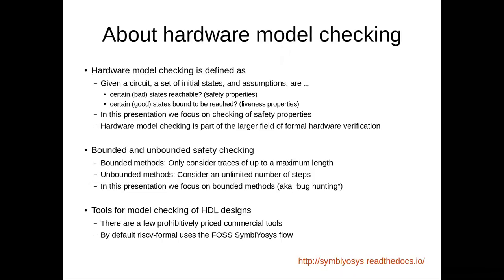There are two categories of proofs: bounded and unbounded proofs. With bounded proofs, we only prove that it's impossible to reach a bad state within a certain number of cycles - we give a maximum bound for the length of a counterexample. With unbounded proofs, we prove that a bad state can actually never be reached. Unbounded proofs are of course better if you can make them, but in many cases this is very hard to achieve. Bounded proofs are something that we can do, and that's what I'm talking about for the most part.